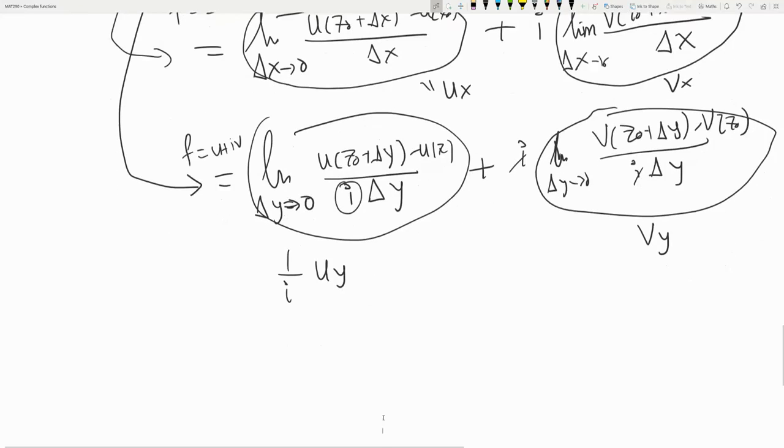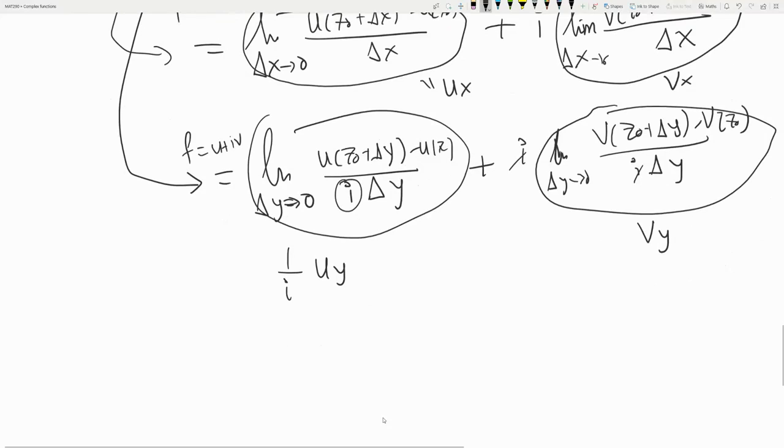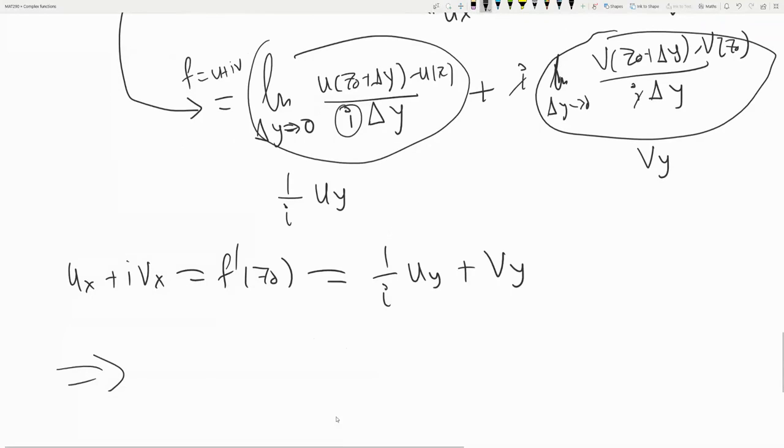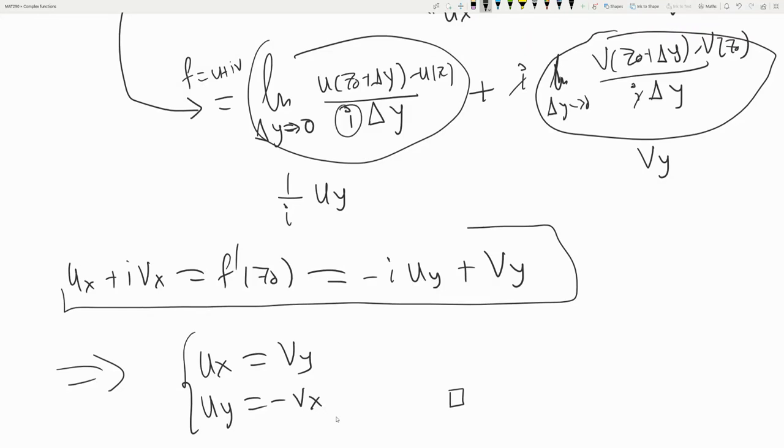But these are supposed to be equal, right? So ux + ivx equals f'(z0), which is also equal to 1/i times uy plus vy. And so equate real and imaginary and you get ux = vy and uy = -vx. So let's write this minus to make it more clear. Please remember this relation and we'll use this later. This is the formula for the derivative.